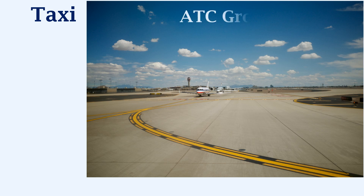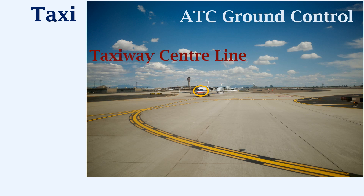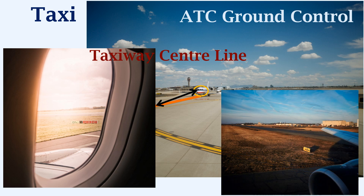The ATC ground control is responsible for giving clear instructions for taxiing the aircraft and the path that needs to be followed. It is the responsibility of the cockpit crew to ensure they understand the instructions given to them. The crew must also ensure they follow the taxiway centerline so that the aircraft can taxi safely. On bigger aircraft, the centerline should appear to pass directly beneath the crew at their designated seats. The crew is also responsible for following the assigned taxi path with the help of taxiway markings located on the side of the taxiway.